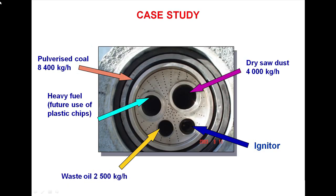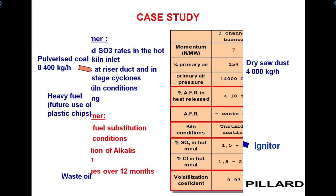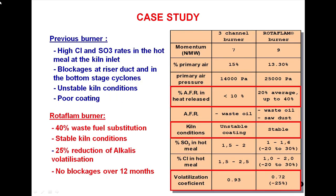Fuels include pulverized coal, heavy fuel, waste oil, dry sawdust, and an igniter. Previous burner issues: high Cl and SO3 rates in the hot meal at the kiln inlet, blockages at the riser duct and in the bottom-stage cyclones, unstable kiln conditions, and poor coating. After replacement: 40% waste fuel substitution, stable kiln conditions, 25% reduction of alkali by volatilization, and no blockages for over 12 months.